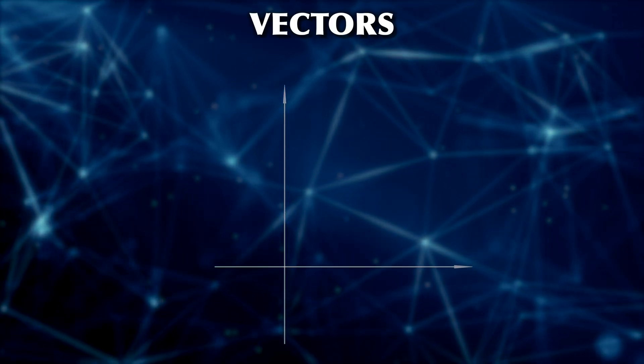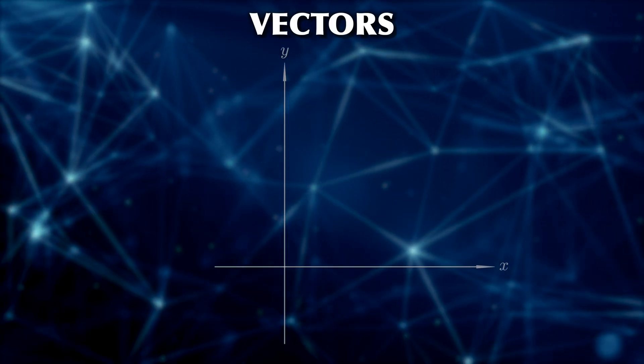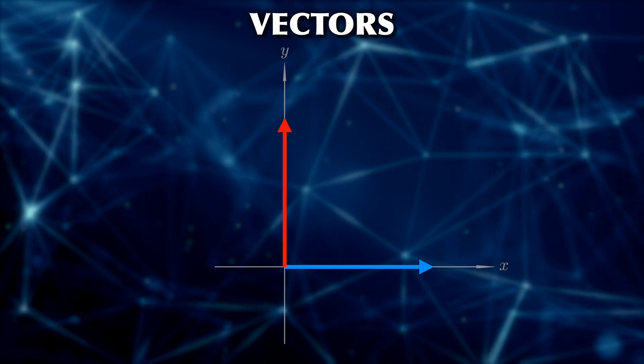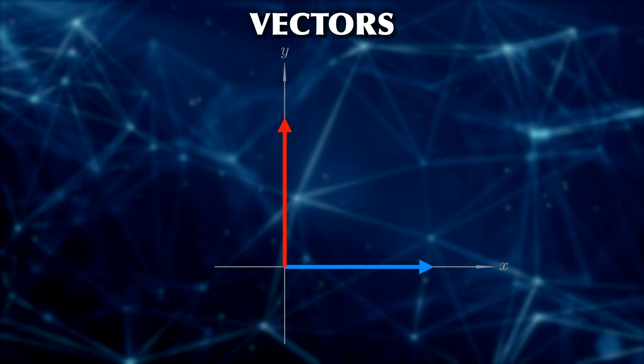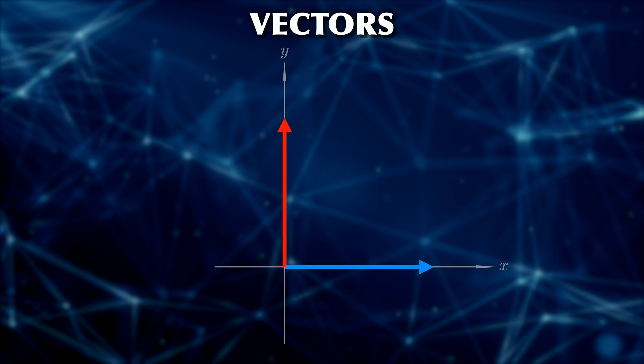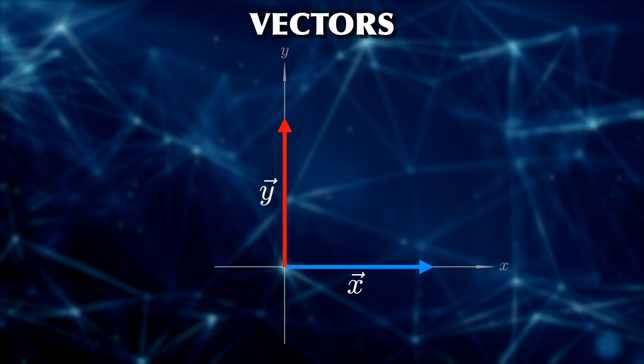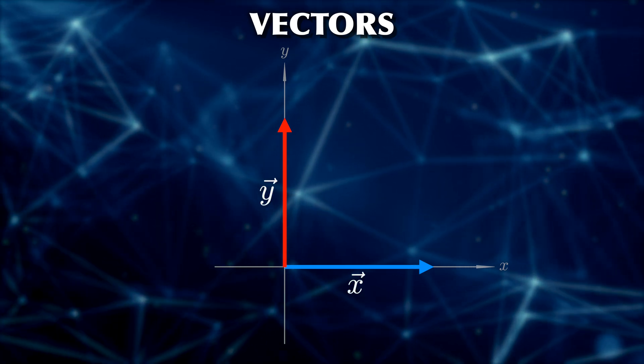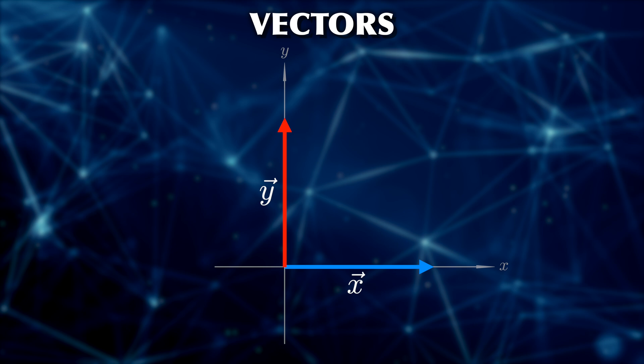For example, in 2D space we can have a vector in the x direction or the y direction. We usually signify vectors by a little vector arrow. This arrow is just a symbol that tells us that something is a vector.